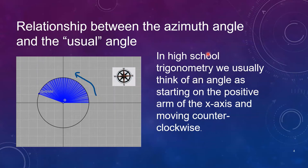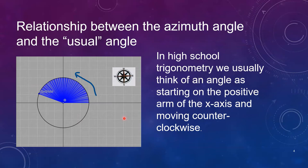In high school trigonometry we usually think of an angle as starting on the positive x-axis and then making its way around the circle in a counterclockwise direction. By contrast the azimuth angle starts on the positive arm of the y-axis and it travels in a clockwise direction.